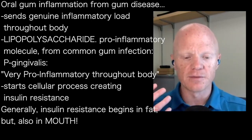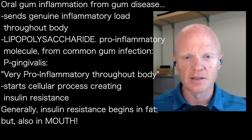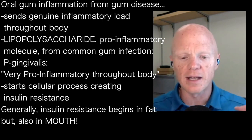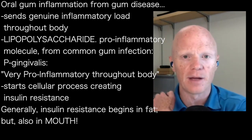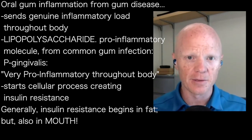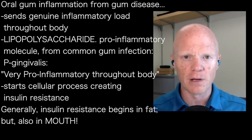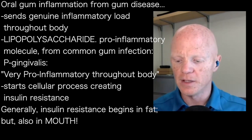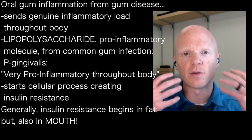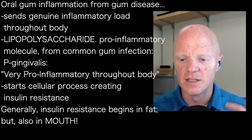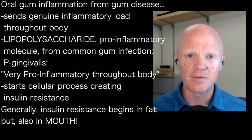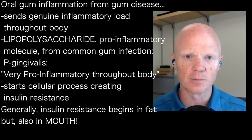The idea of oral inflammation from a gum infection — gingivitis or periodontitis — is that it contributes a genuine inflammatory load throughout the rest of the body. Papers published from this lab detail lipopolysaccharide, a common pro-inflammatory molecule and remnant from bacteria, coming from a common oral infection, P. gingivalis. This pro-inflammatory molecule from oral infections is very pro-inflammatory throughout the body and explicitly activates a process within cells that creates insulin resistance.